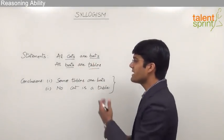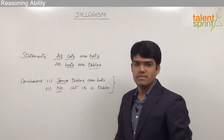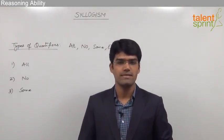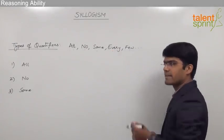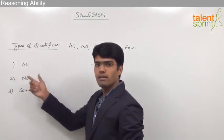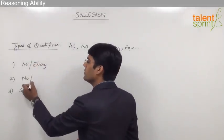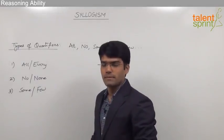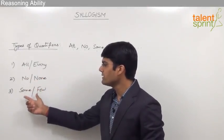In the given statements we have different quantifiers like all, some, no, etc. A quantifier is essentially used to express the quantity of a given set. The different types of quantifiers we have are all, no, some, every, few, etc. These quantifiers can be classified into three types: the first is all or every, the second is no or none, and the third is some or few.